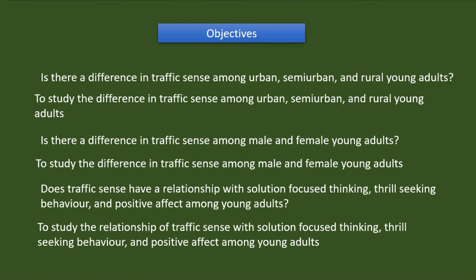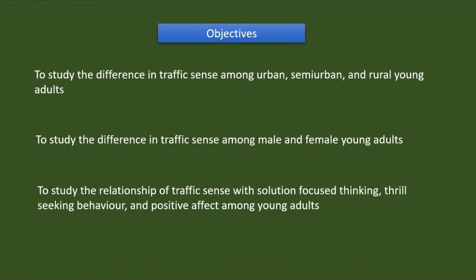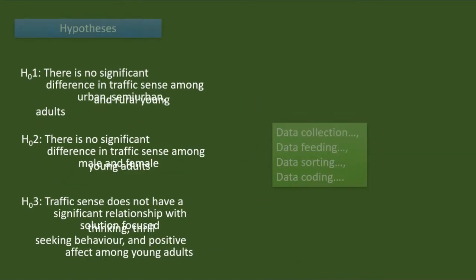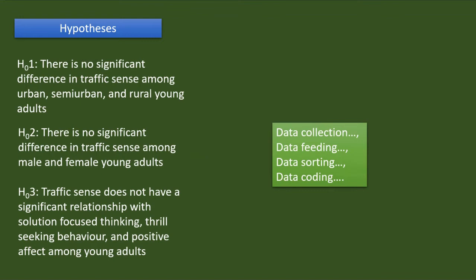Based on these questions, I set my objectives and hypotheses. The objectives are: to study the difference in traffic sense among urban, semi-urban, and rural young adults; to study the difference in traffic sense among male and female young adults; and to study the relationship of traffic sense with solution-focused thinking, thrill-seeking behaviour, and positive affect. I chose null hypotheses: there is no significant difference in traffic sense among urban, semi-urban, and rural young adults; there is no significant difference in traffic sense among male and female young adults; and traffic sense does not have a significant relationship with solution-focused thinking, thrill-seeking behaviour, and positive affect among young adults.